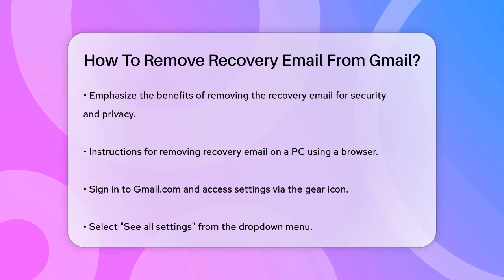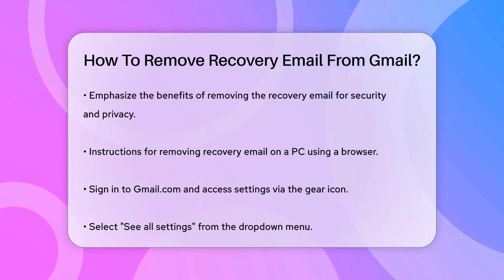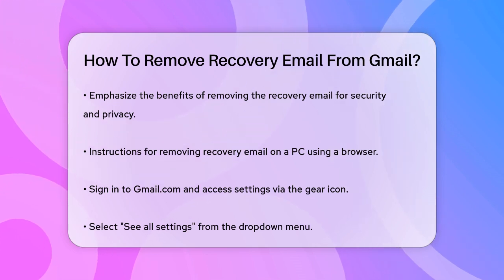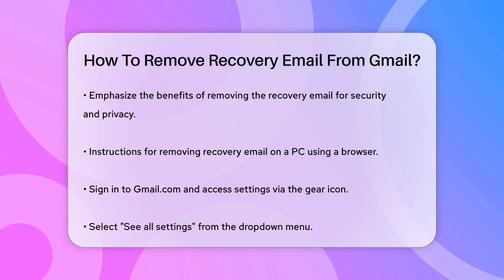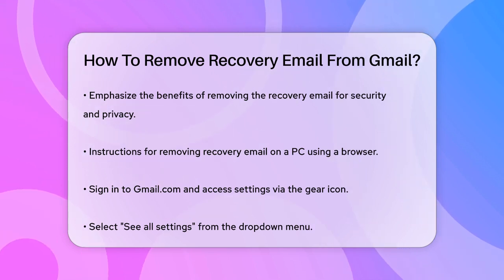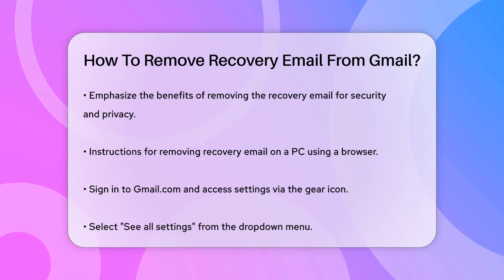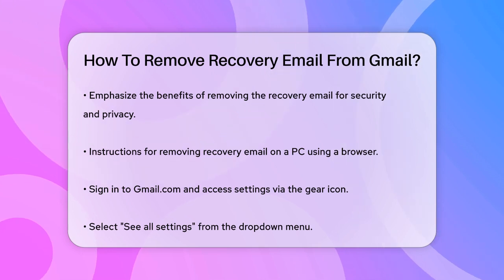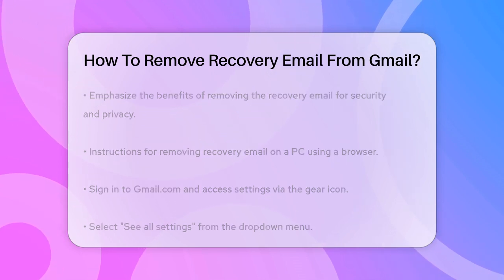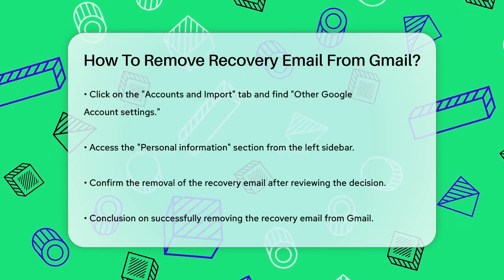If you're using a PC and want to remove your recovery email from Gmail, here's how you can do it. Open your browser and navigate to gmail.com. Sign into your account if you haven't already. Once you're in, look for the gear icon in the top right corner of your inbox and click on it. From the drop-down menu, select see all settings.